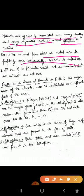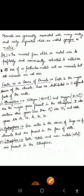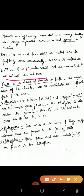The important thing is: all the ores of a particular metal can be called minerals, but all minerals are not ores. We cannot call all minerals ores because we cannot always conveniently extract the metal from every mineral. But all ores can definitely be called minerals.